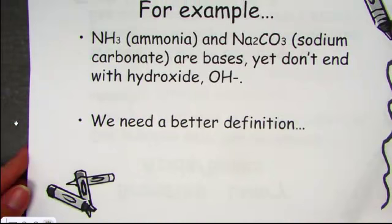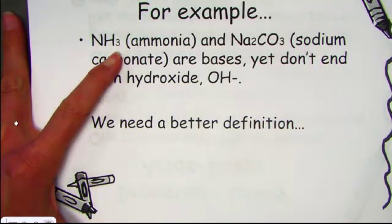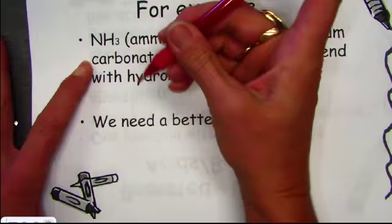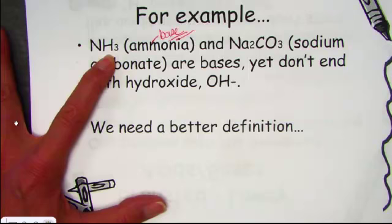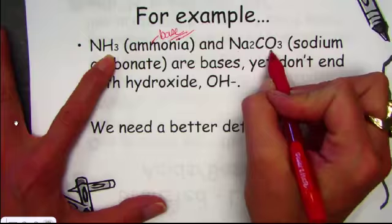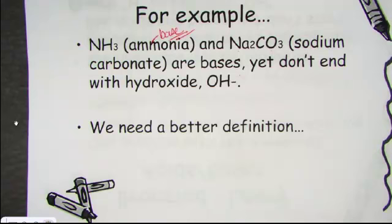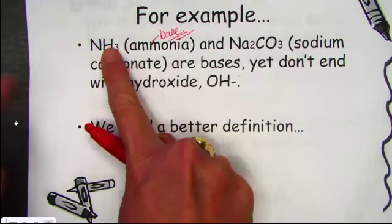We needed a better definition to include more substances that behave like acids and bases yet don't start with H or end with OH — and that's what the Bronsted-Lowry theory has done. For example, we tested ammonia, which turned red litmus paper blue, had a pH above 7, felt slippery, and did everything a base is supposed to do — yet it doesn't end with OH. Similarly, sodium carbonate is a base, yet nowhere in its formula is there an OH.